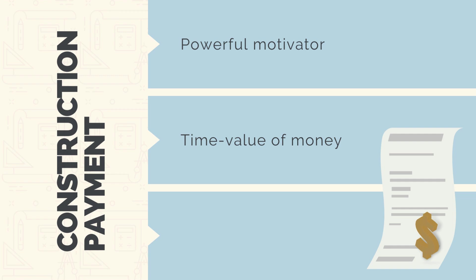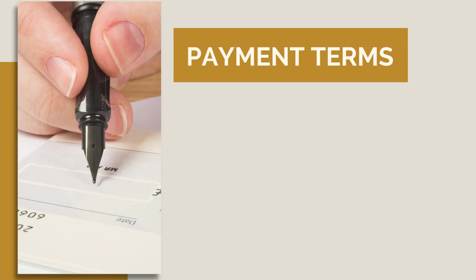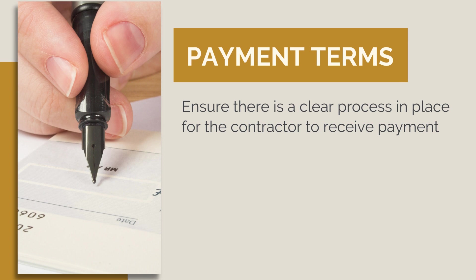Finally, completed works and unpaid bills are a form of security. When a principal pays for something, effectively they're agreeing that the works have been completed — we'll talk more about this later. The payment terms in the contract are there to ensure there is a clear and transparent process for how the contractor is to receive payment.